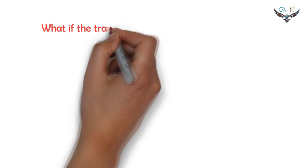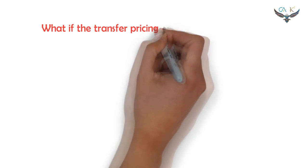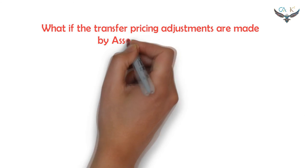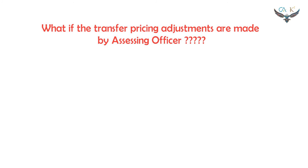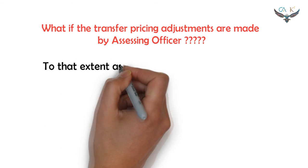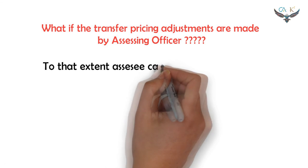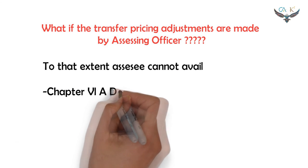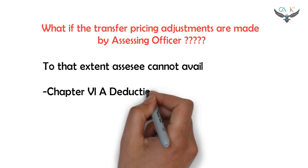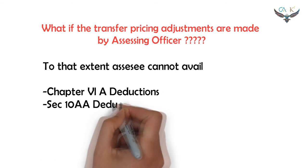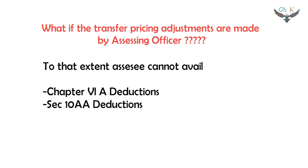What if the assessee fails to make the transfer pricing adjustment and the adjustments are made by the Assessing Officer? In such case, to the extent of the transfer pricing adjustment made by the Assessing Officer, the assessee cannot avail the Chapter VI-A deduction and the Section 10AA deduction.